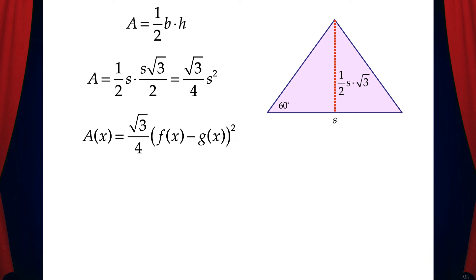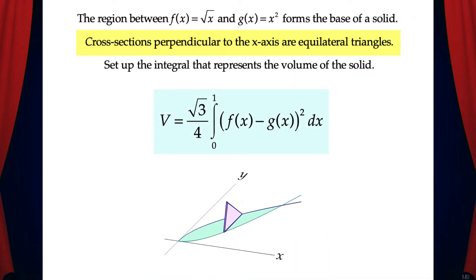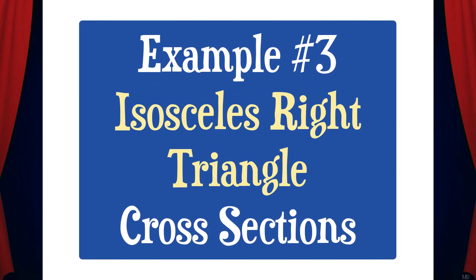We can write A of x, which is root 3 over 4 times the quantity of f of x minus g of x squared, because f of x minus g of x is the side of this triangle. That means dv equals root 3 over 4 times the quantity of f of x minus g of x squared dx. That means the volume of the solid is root 3 over 4 times the integral from a to b of the quantity of f of x minus g of x squared dx. And back to our original problem, the volume of the solid is root 3 over 4 times the integral from 0 to 1 of the quantity of f of x minus g of x squared dx.